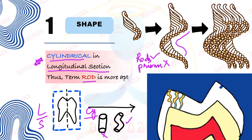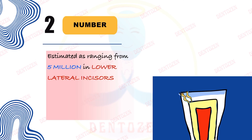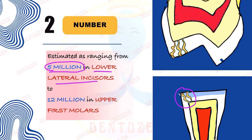Second, the number of enamel rods is in a range because it differs for different teeth. The number of rods is about five million in lower lateral incisors and about twelve million in upper first molars. That can be another important viva or entrance question.